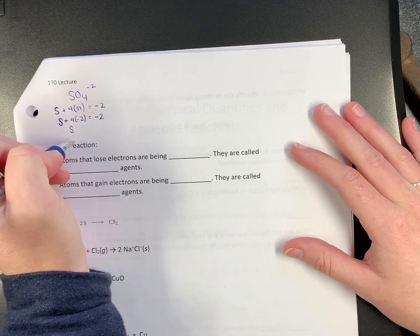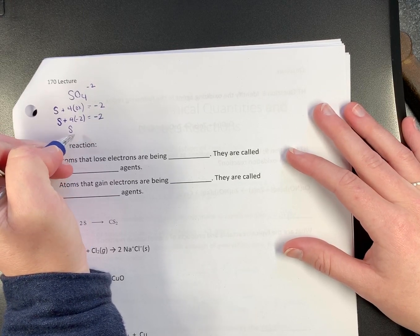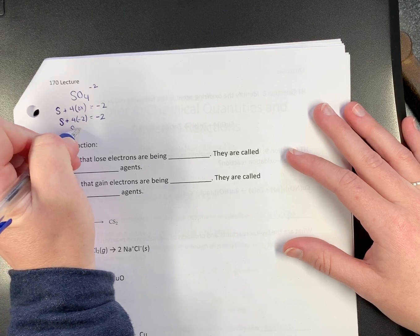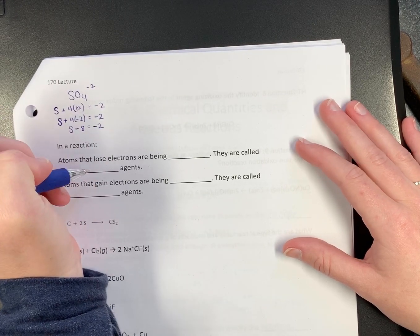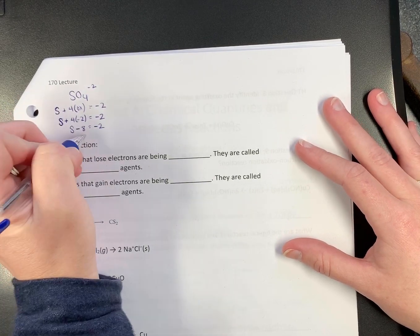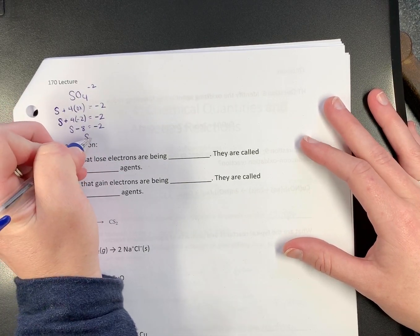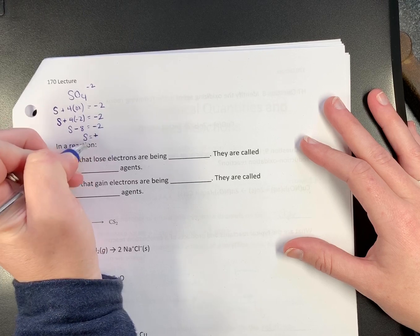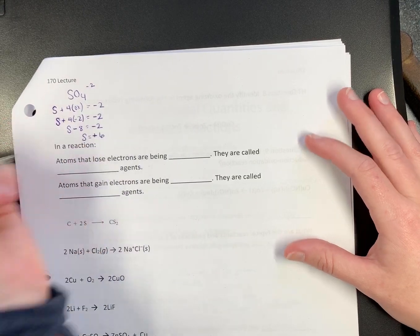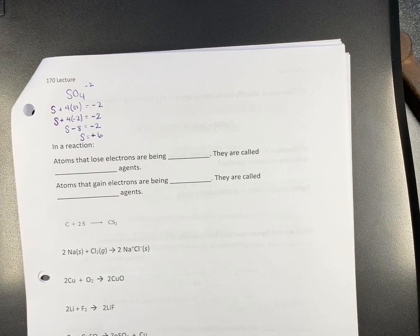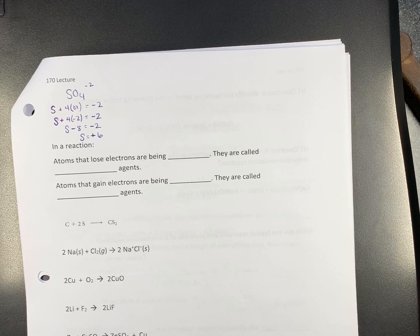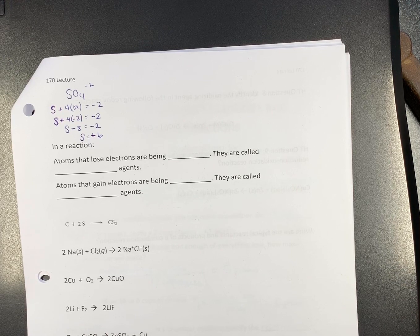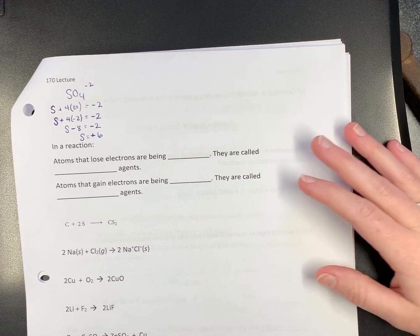S, what's 4 times negative 2? Negative 8 equals negative 2. So the charge on sulfur is positive 6.